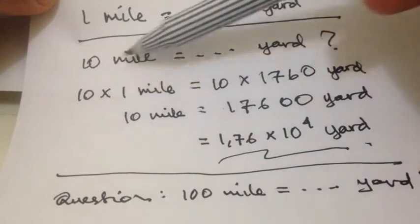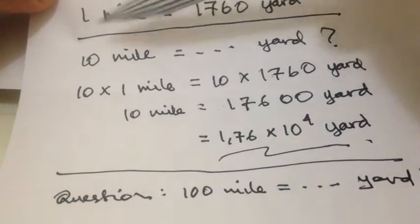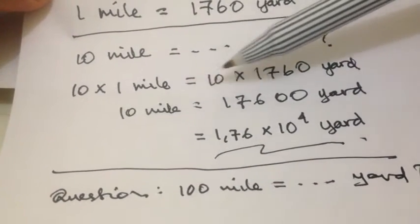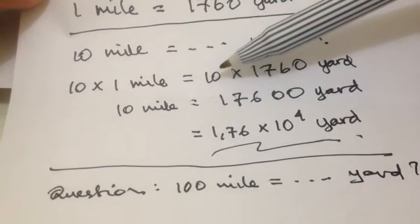we need to put this 10 over here, and then we multiply this 10 with 1 mile, which we have from here, and then it's equal to 10. We put 10 because we have 10 on the left, then we'll have 10 on the right.